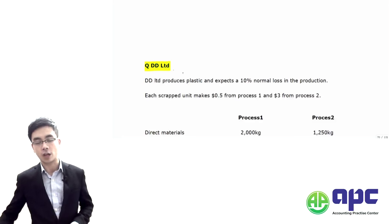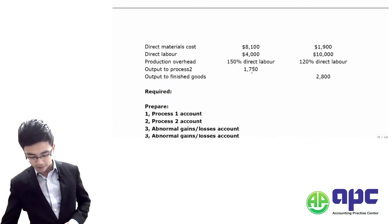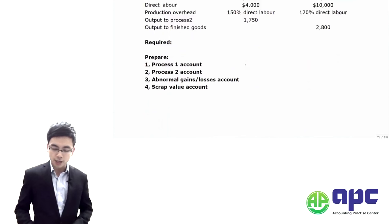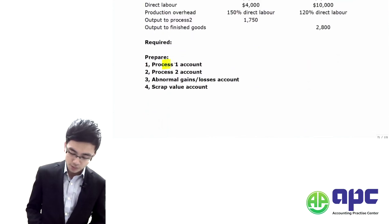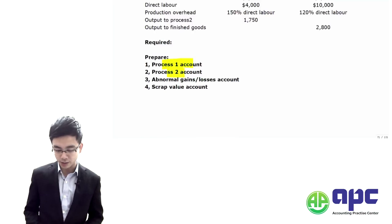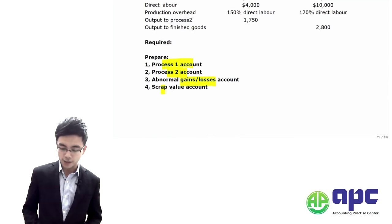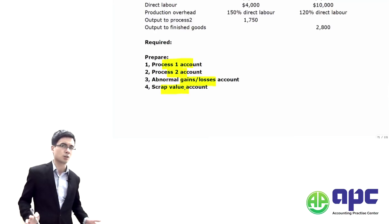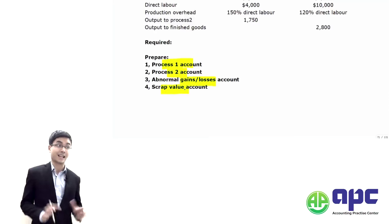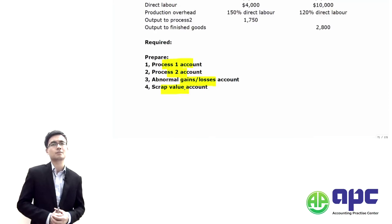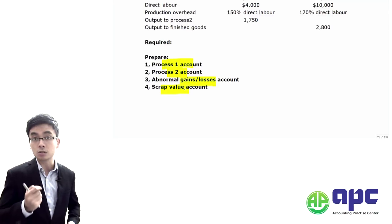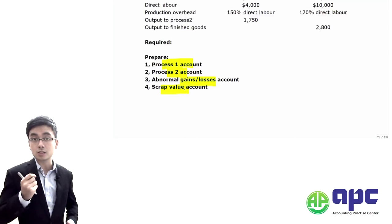The requirements are: finish the process one account, the process two account, the abnormal gains or losses account, and the scrap value account — covering normal losses, abnormal losses, and abnormal gains together, because they all affect the scrap value.